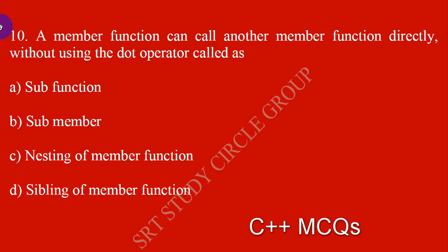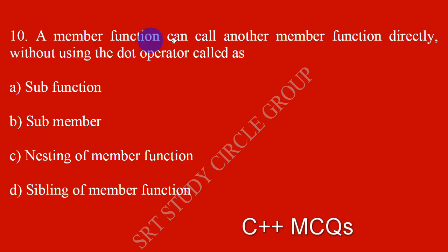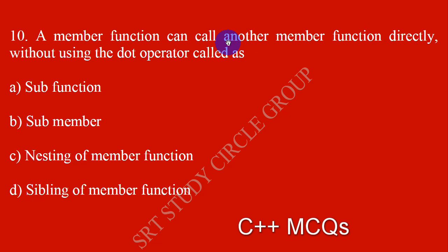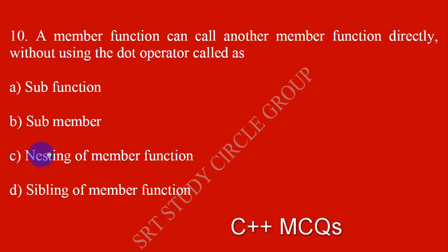A member function can call another member function directly without using the dot operator. When one member function calls another directly without the dot operator, that is called the nesting of member functions.